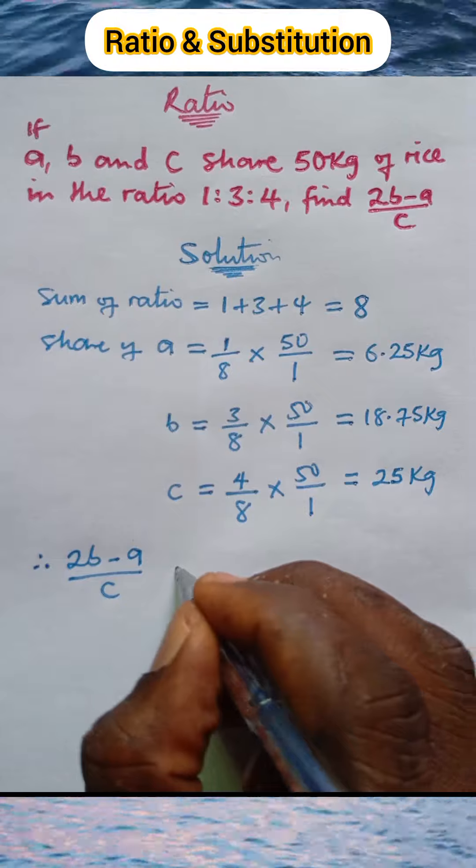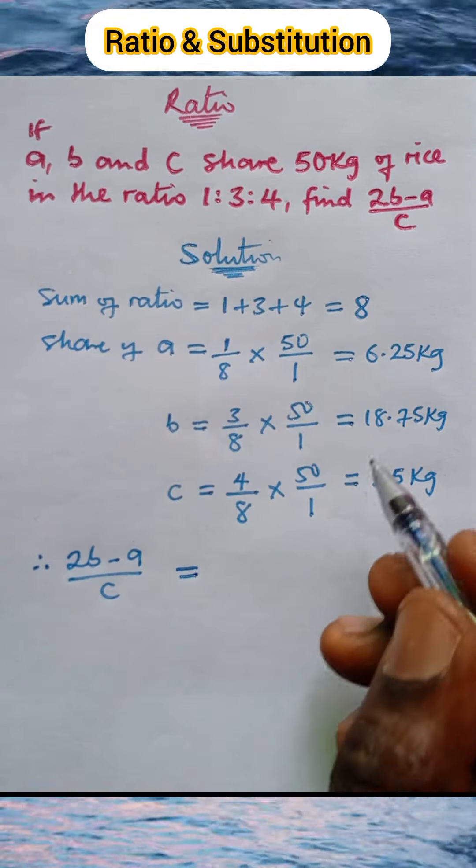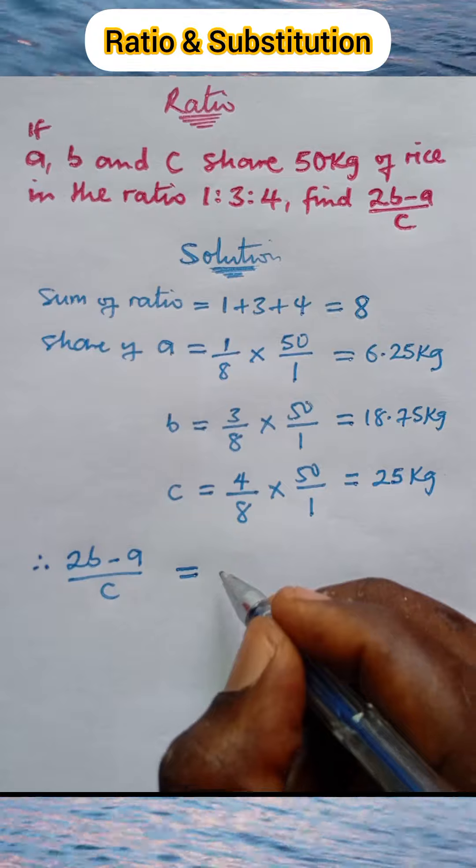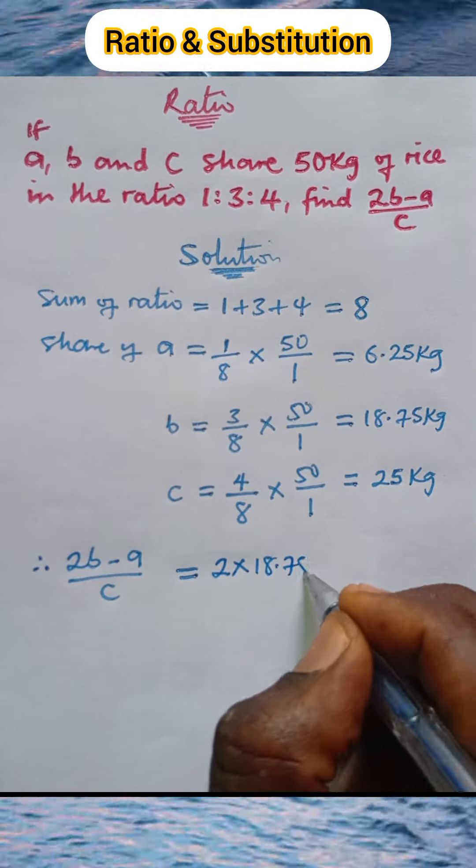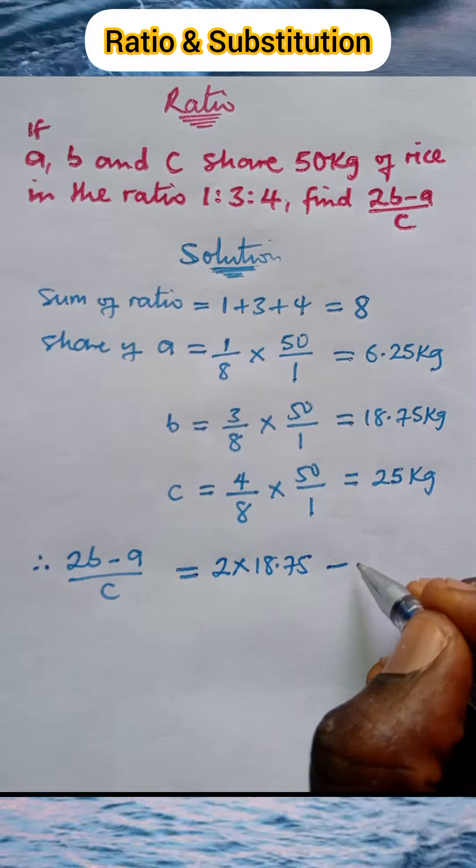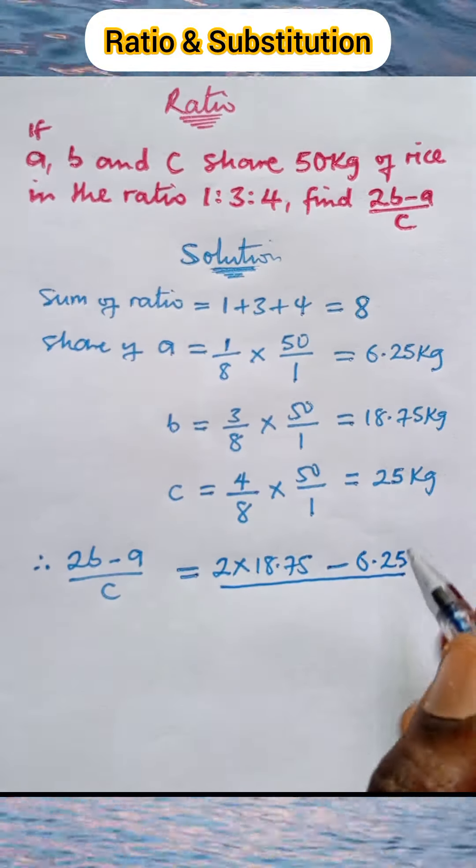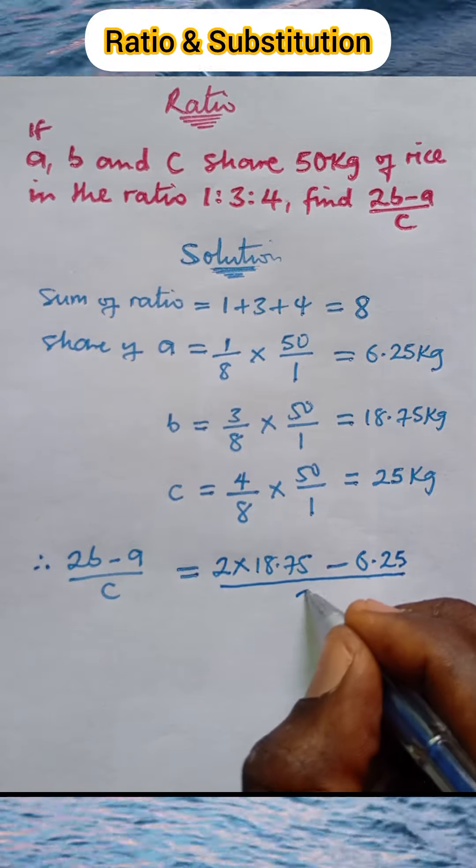This is simply a substitution. We have that b is 18.75, so we calculate: 2 × 18.75 minus the share of a, which is 6.25, all over the share of c, which is 25.